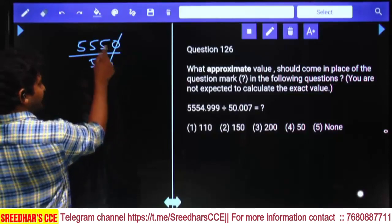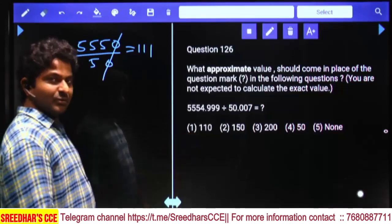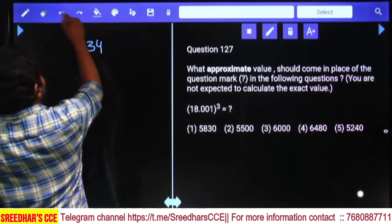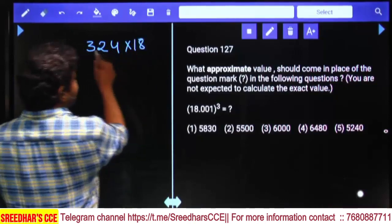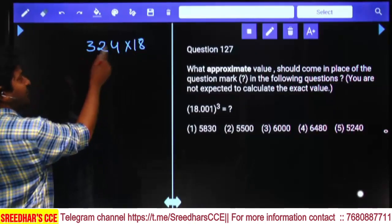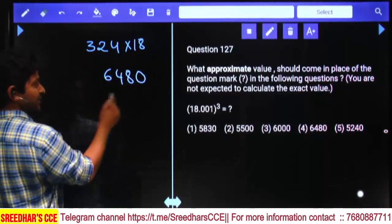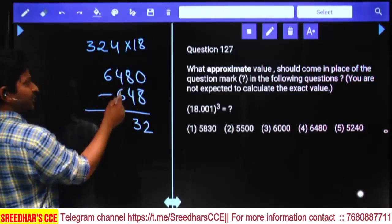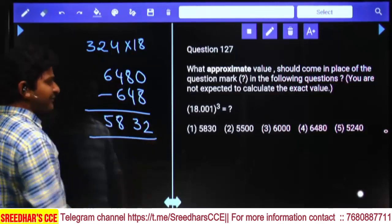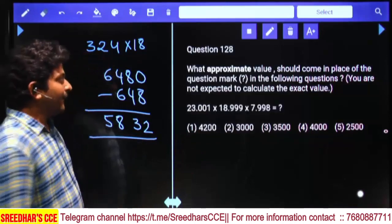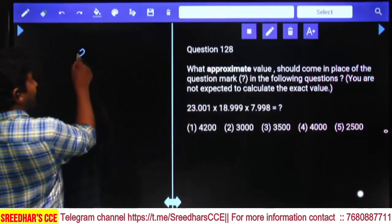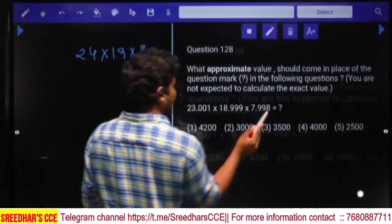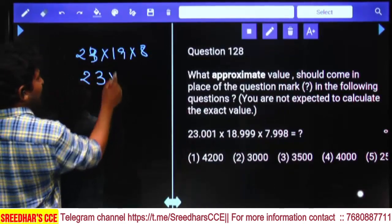These are all approximations. 5550 divided by 50: zeros cancel, 555 divided by 5 is 111, approximately 110. Next, 18 cube: 18 square is 324, times 18. Treat as 324 times 20 minus 2 times. 324 times 2 is 648, times 20 is 6480 minus 648 equals 5832, approximately first option.